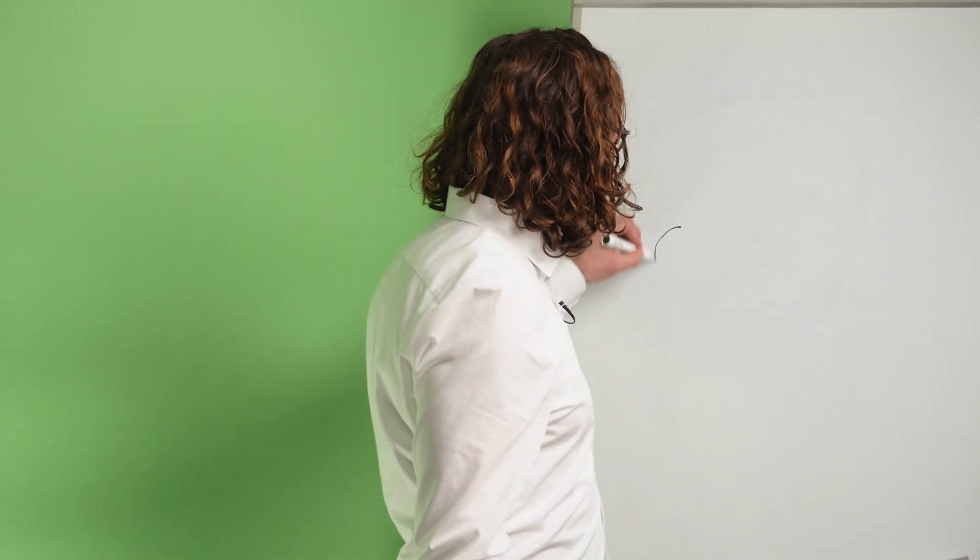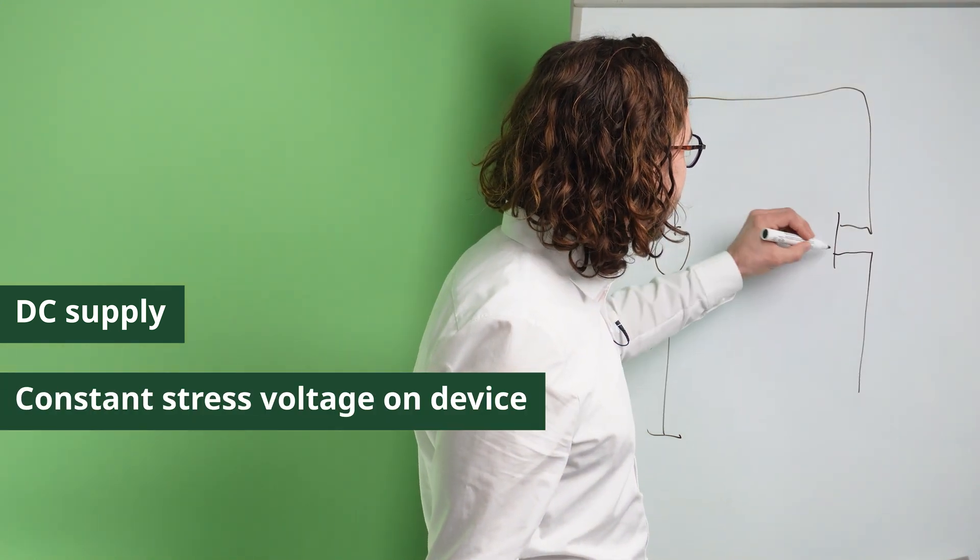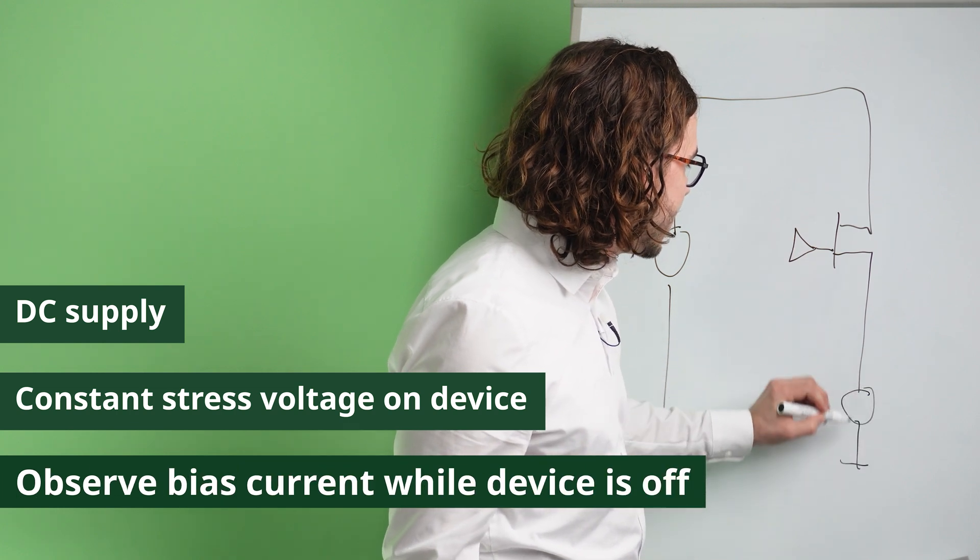HTRB is a test where we are testing the isolation barrier in the device. The basic test setup is that we are using a DC supply and apply a constant stress voltage on the device while the device is off and only observe the bias currents.